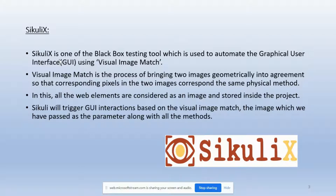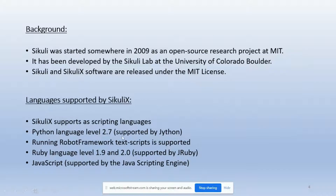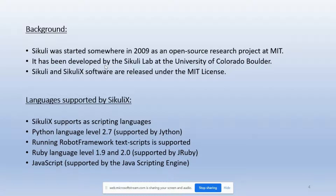The image is used as parameters along with all the methods. Sikuli X was started somewhere in 2009 as an open source project by two graduates at MIT. The project was left by them after their graduation. Later it was taken over by a resigned IT employee and developed by the CCULY lab at the University of Colorado. CCULY and CCULX are released under the MIT license.